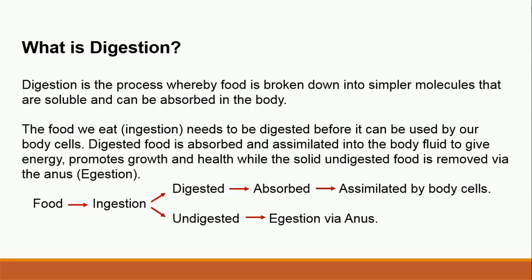The undigested solid food is removed via the anus, and this process is called egestion. When we ingest food, some of it gets digested while some remains undigested. The digested food is absorbed into the bloodstream, and from there it is assimilated by body cells — meaning it is used up by the body cells to give energy and promote health. The undigested solid waste is removed through the anus in a process called egestion.